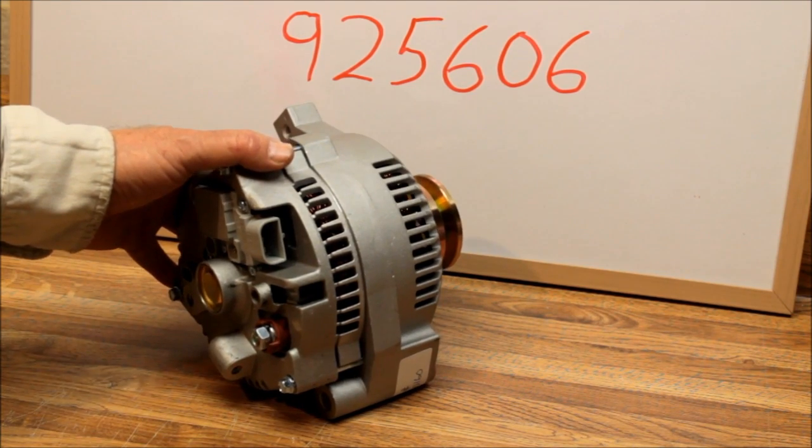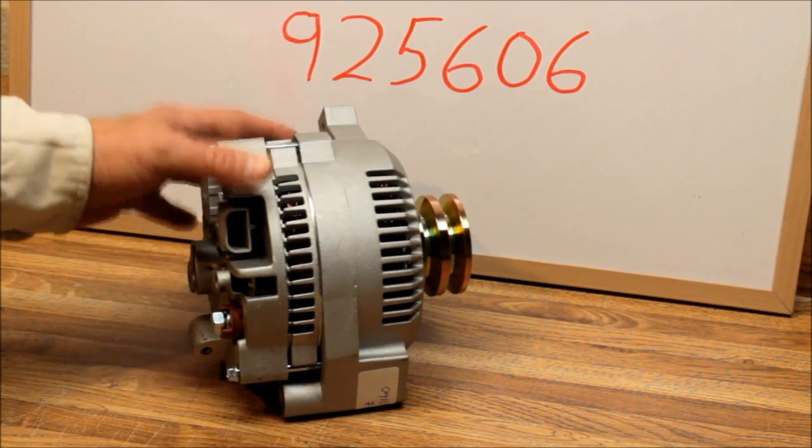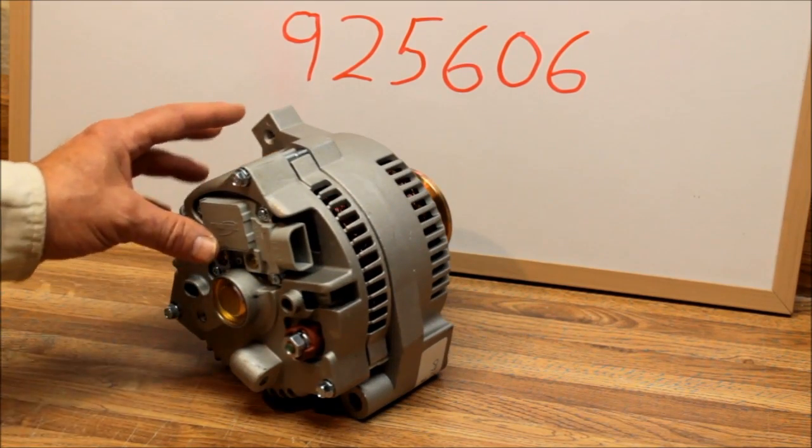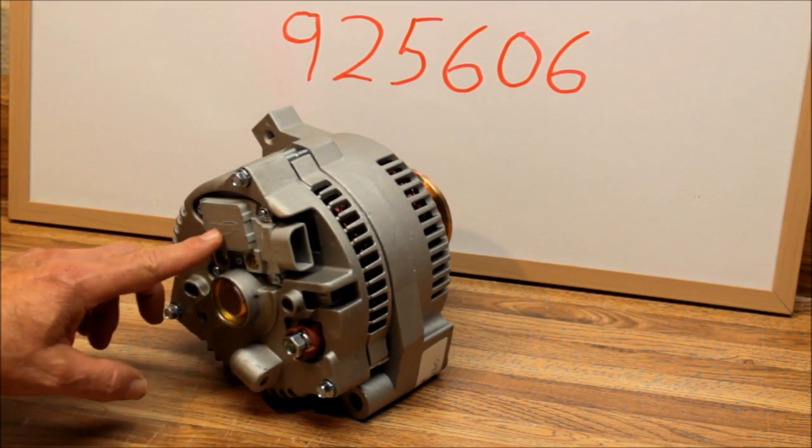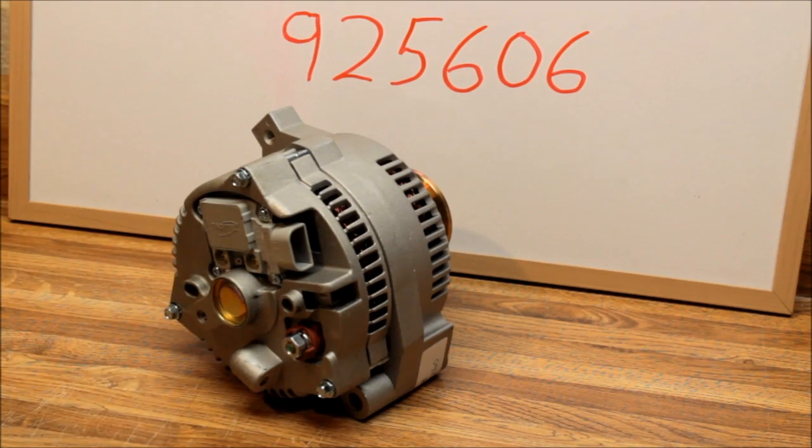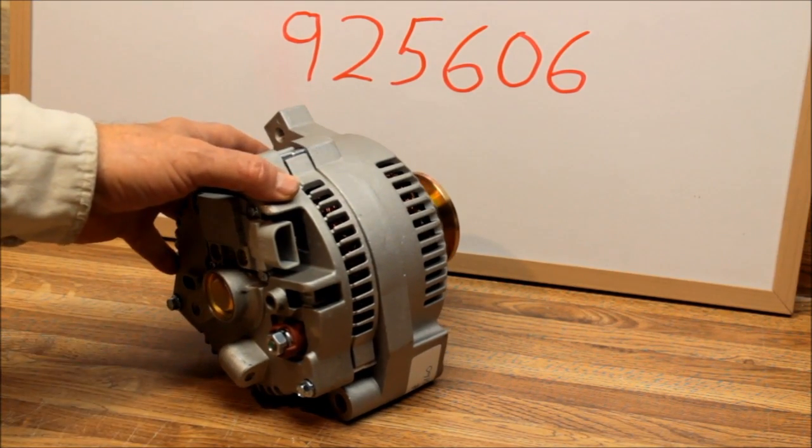The only thing is the 3G series has a built-in voltage regulator here on the back of the alternator, where the old 1G series had an external regulator.